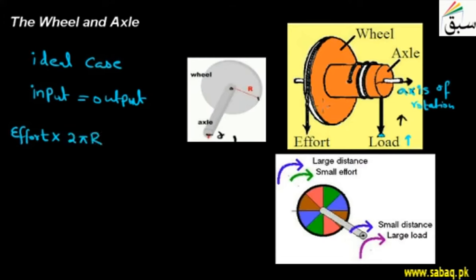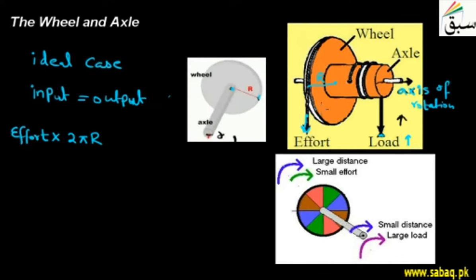If you are putting effort on the wheel, the wheel has a rope passing around it, and you are applying effort on it. The wheel has a radius of capital R. Since the wheel is circular in shape, when the rope travels through one full rotation, the distance traveled is the circumference of the circle, which is 2πR.